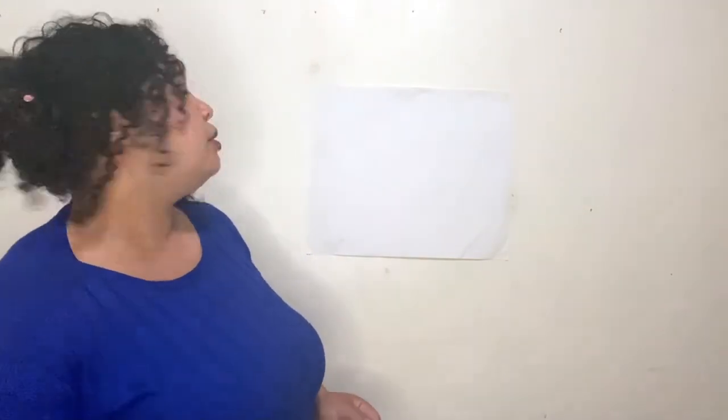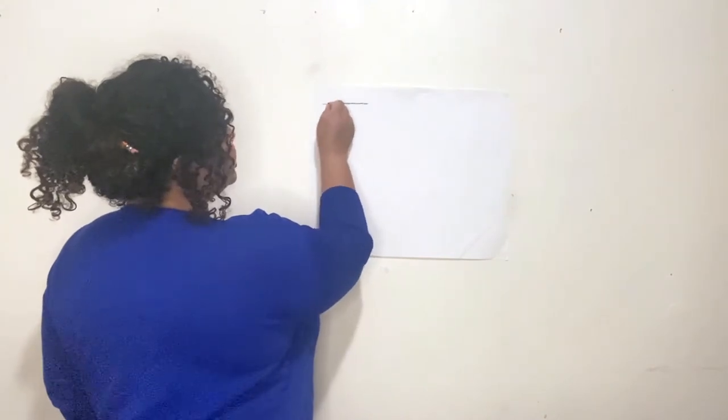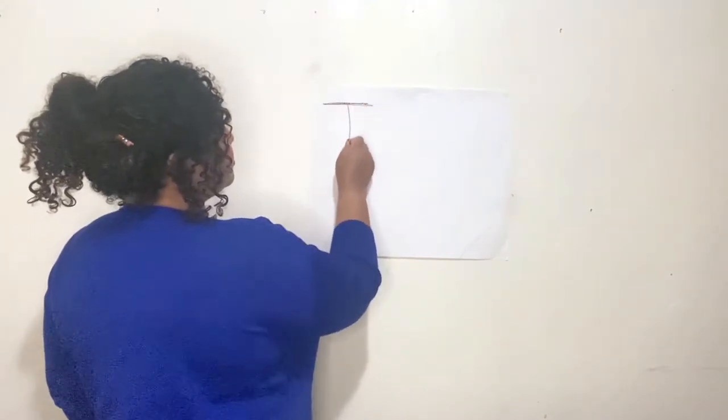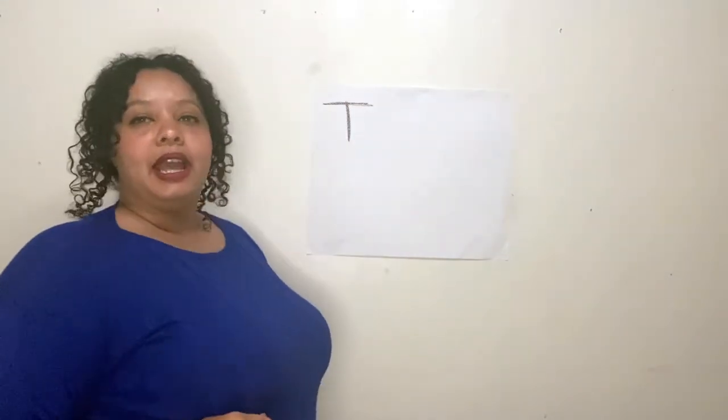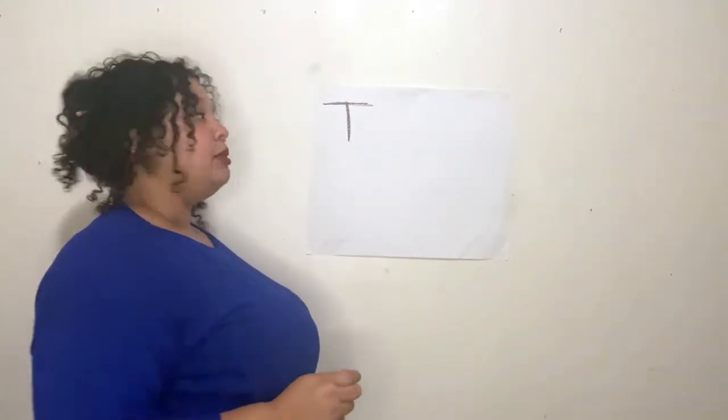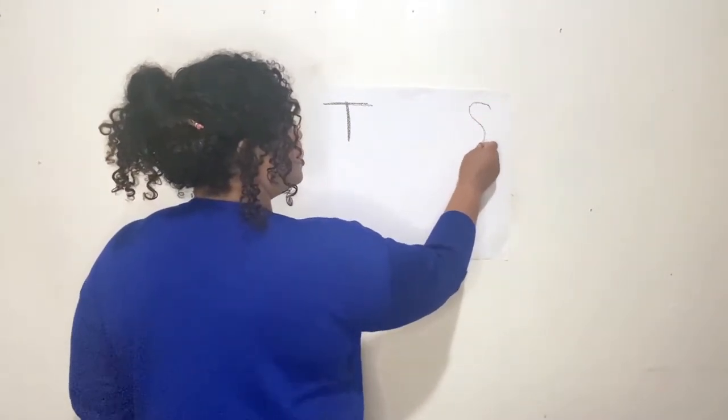There is a little boy named Timmy. I'm going to make a capital T. Timmy. And Timmy's best friend was a little girl named Susie. So I'm going to make a capital S for Susie.